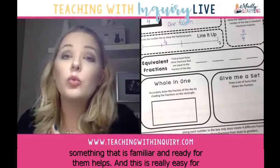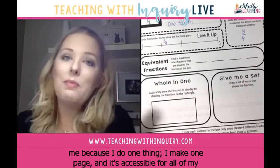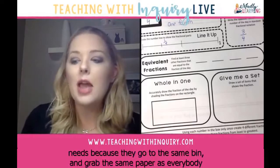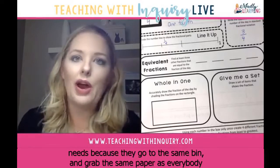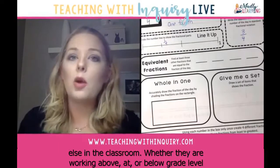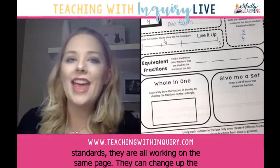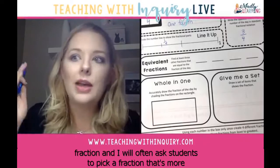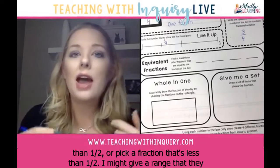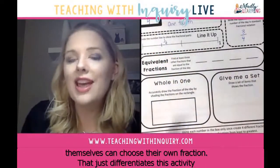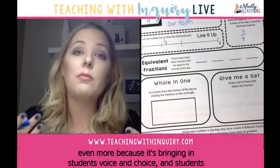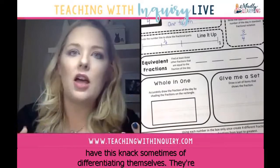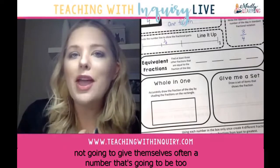Having something familiar and ready for students helps. I make one page and it's accessible for all of my students — this is really helpful for students with special education needs, because they go to the same bin and grab the same paper as everybody else, whether working above, at, or below grade level. I'll often ask students to pick a fraction that's more than one-half or less than one-half, giving them a range so they can choose their own fraction, which differentiates the activity further by bringing in student voice and choice.